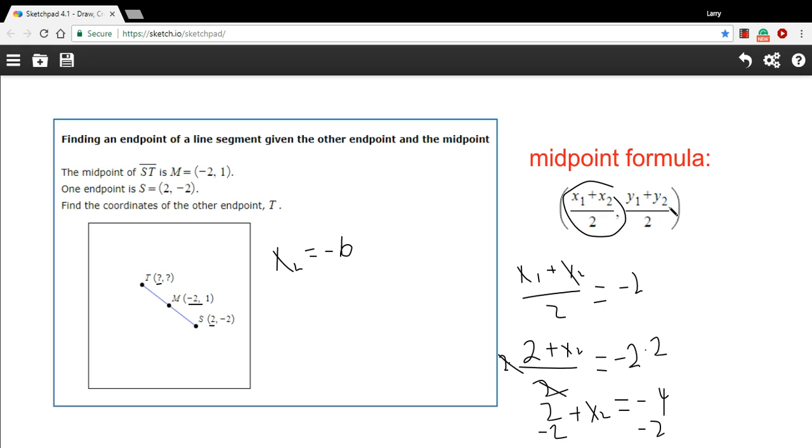Now let's try the same thing with the y part of the formula. y1 is negative 2. So I'll just put that in right away. Negative 2 plus y2 over 2, that's this whole chunk right here, equals the y-coordinate of our midpoint, which is 1.